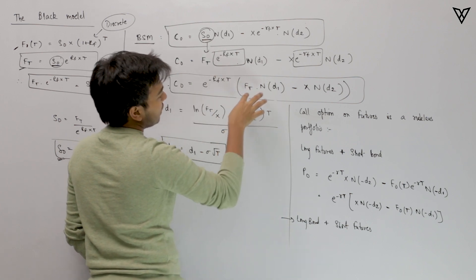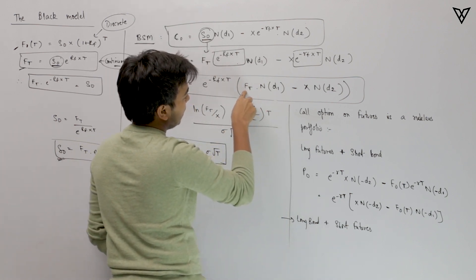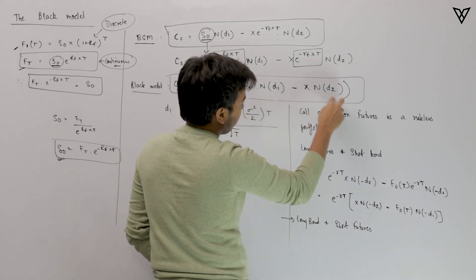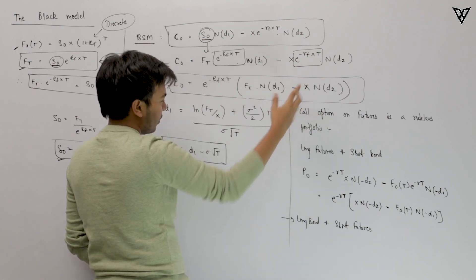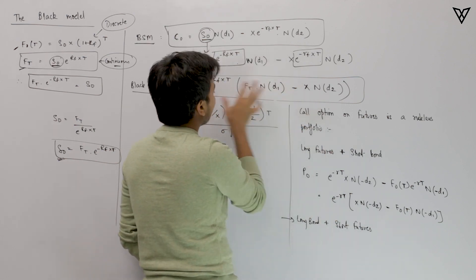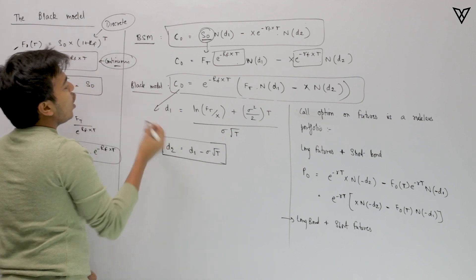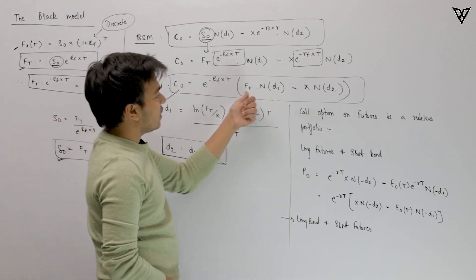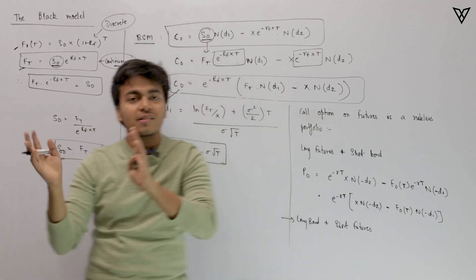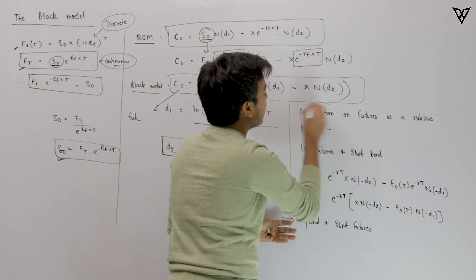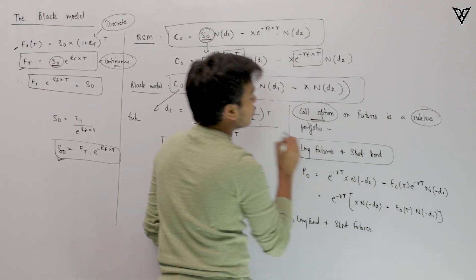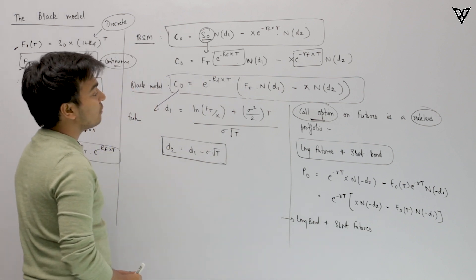What we are doing here is taking a long futures position — represented by F(t) × N(d1), which has a positive sign — and going short bond, represented by X × N(d2) with a negative sign. So a call option on a futures or forward contract is replicated by: long futures plus short bond. This equivalence means we can replicate a call option on a futures contract using a long futures position and a short bond position.